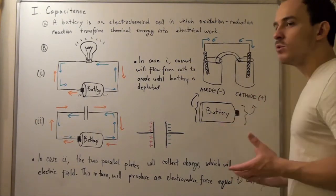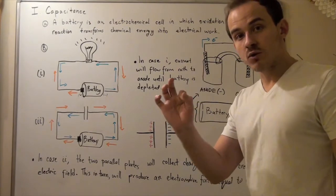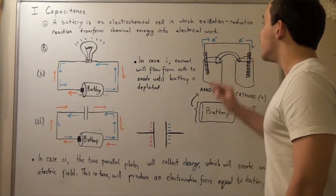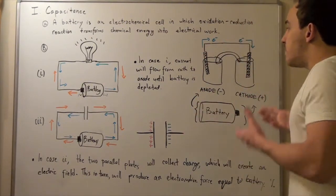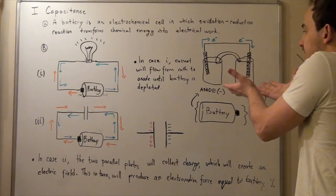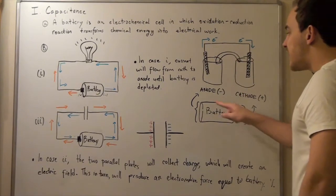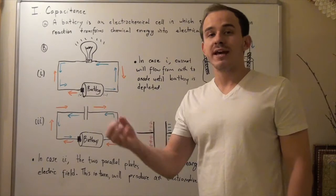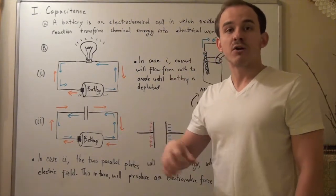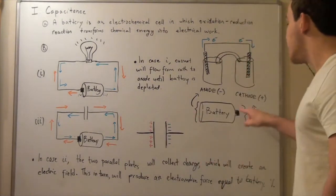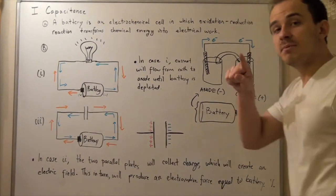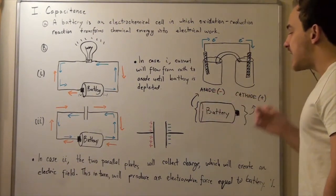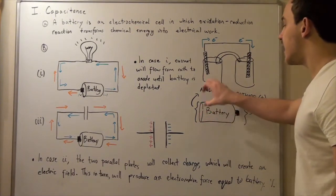The moment our voltage equalizes and the change in voltage goes to zero — meaning the voltage in both half cells is the same — electrons will stop moving. A battery is essentially this exact setup. If you pick up a AA, AAA, or D battery, you'll see the anode and cathode are labeled. The positive side is our cathode, and the negative side is our anode, because electrons are lost there.